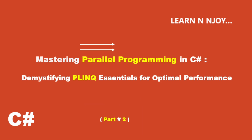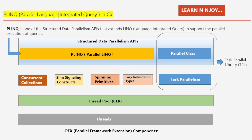Without any further delay, let's get started. PLINQ, that is Parallel Language Integrated Query in C#. We all love the simplicity and expressiveness of LINQ, but what if we could take it to the next level by introducing parallelism? That's where PLINQ comes in. It's a feature in C# that allows us to execute LINQ queries in parallel, unlocking a whole new level of performance. PLINQ is like a tool that makes LINQ work even better by letting it handle multiple tasks at once.